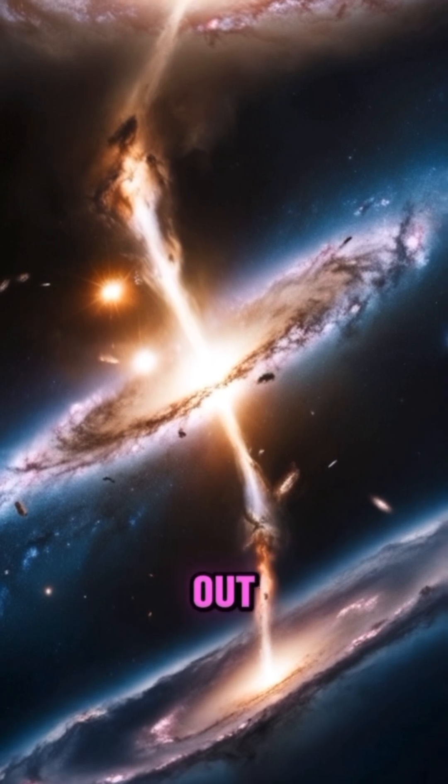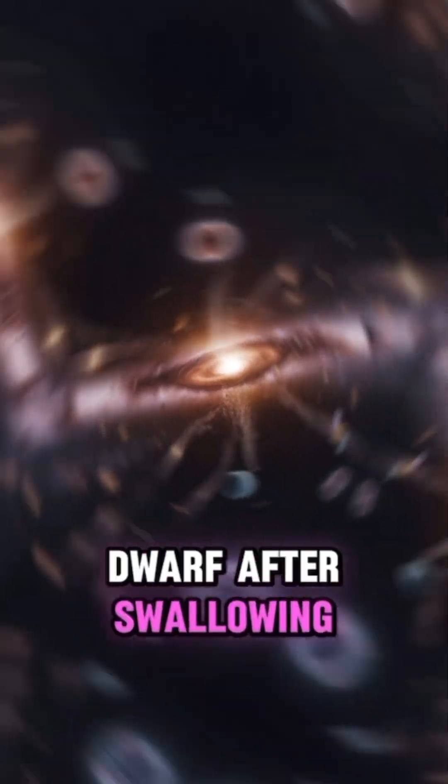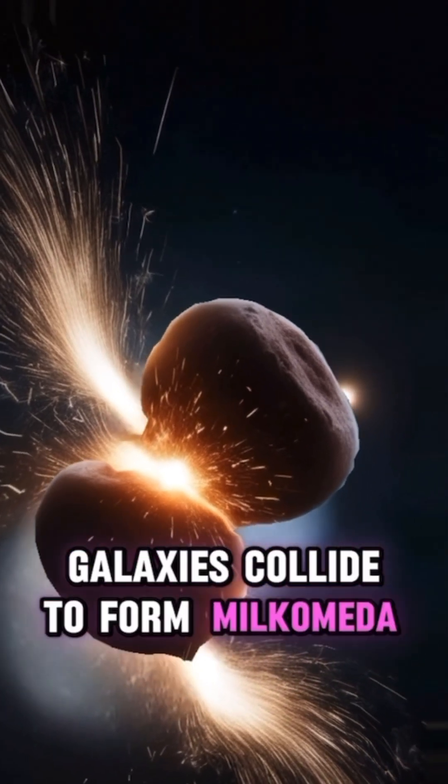10 billion years. The sun burns out, shrinking into a white dwarf after swallowing Mercury, Venus, and maybe Earth. Meanwhile, the Milky Way and Andromeda galaxies collide to form Milcomeda.